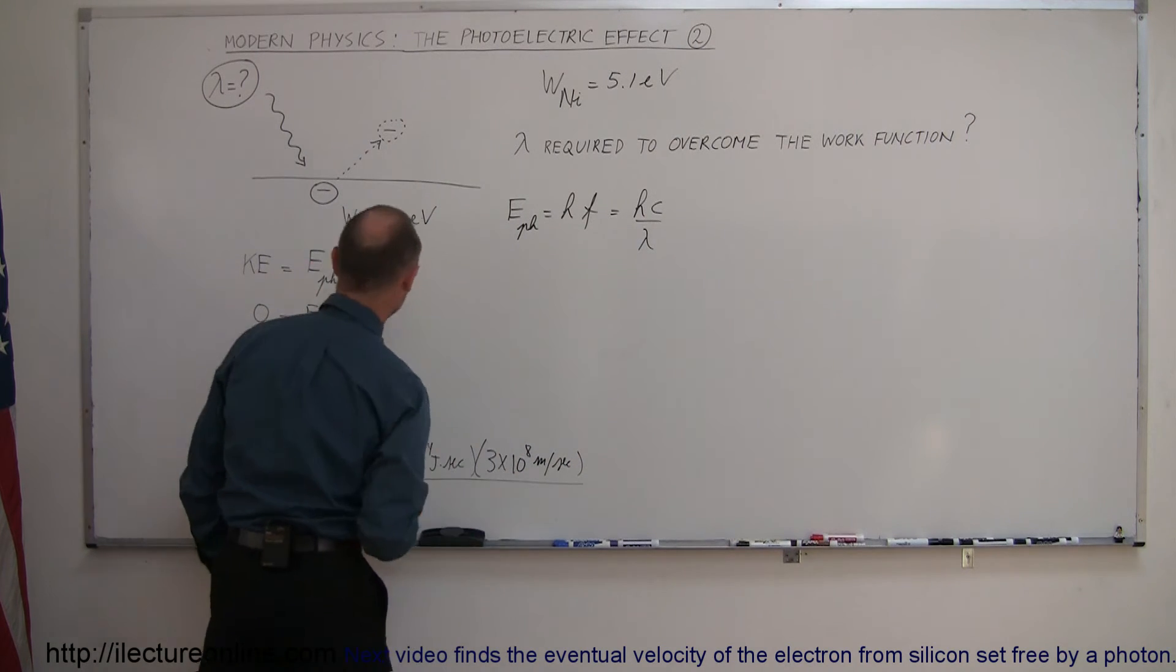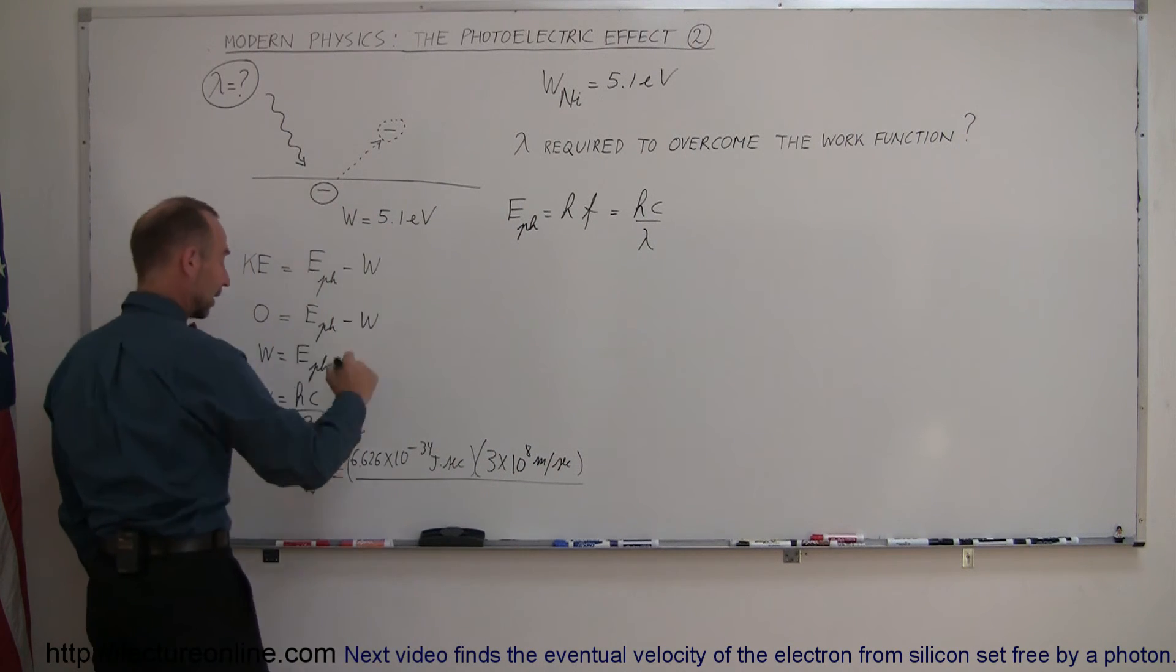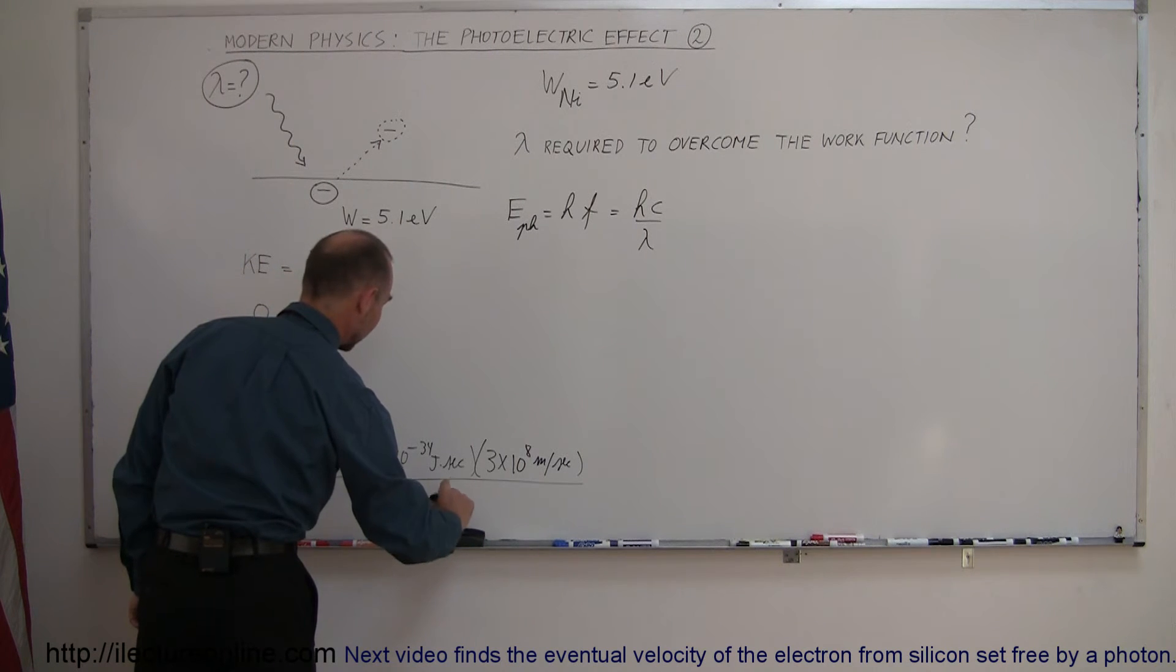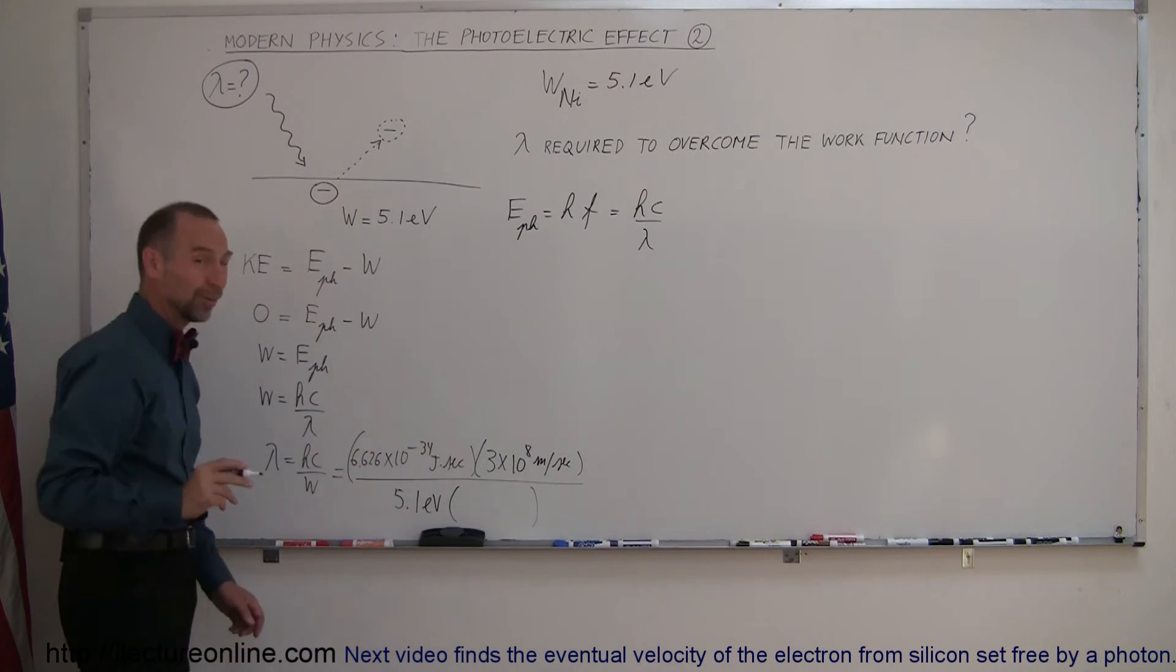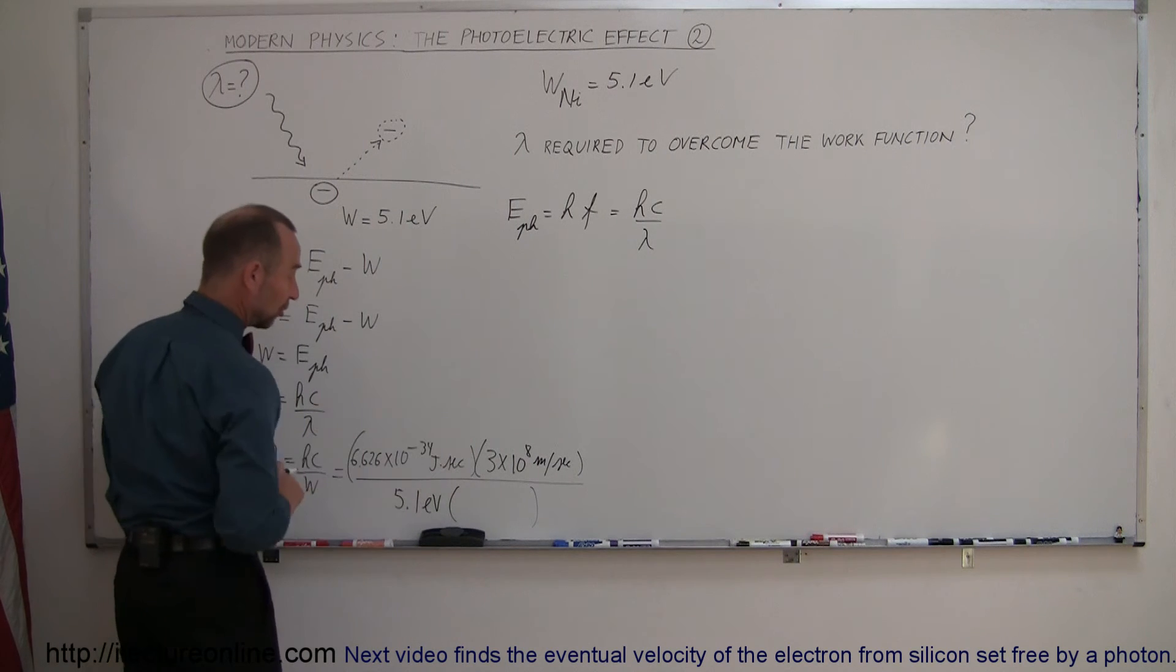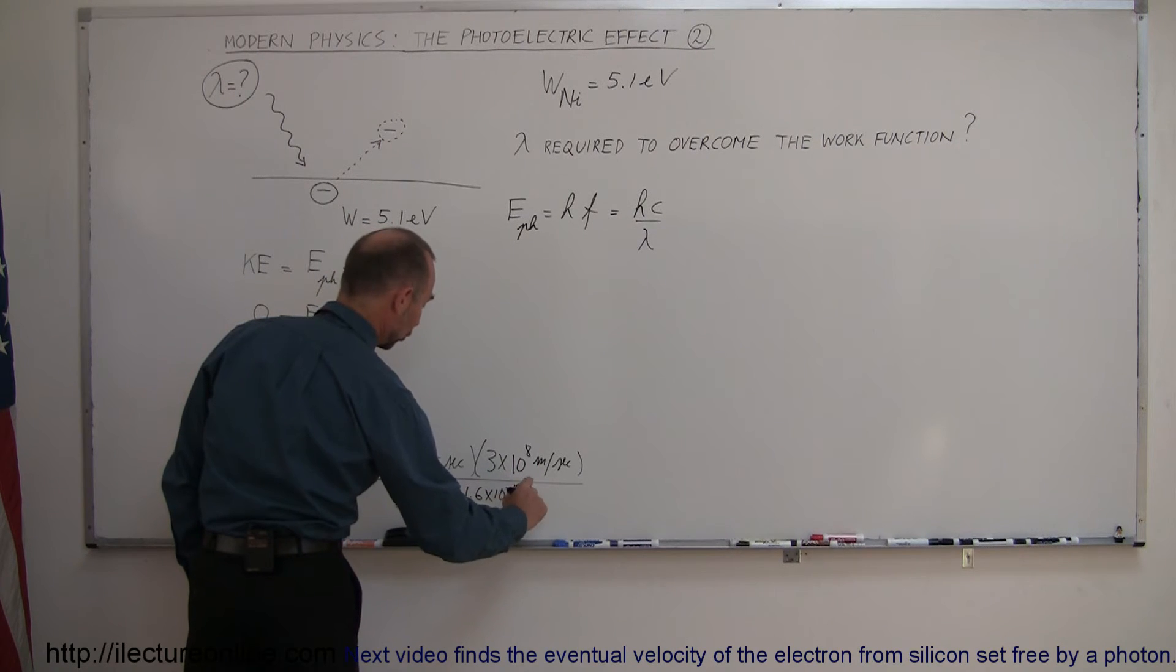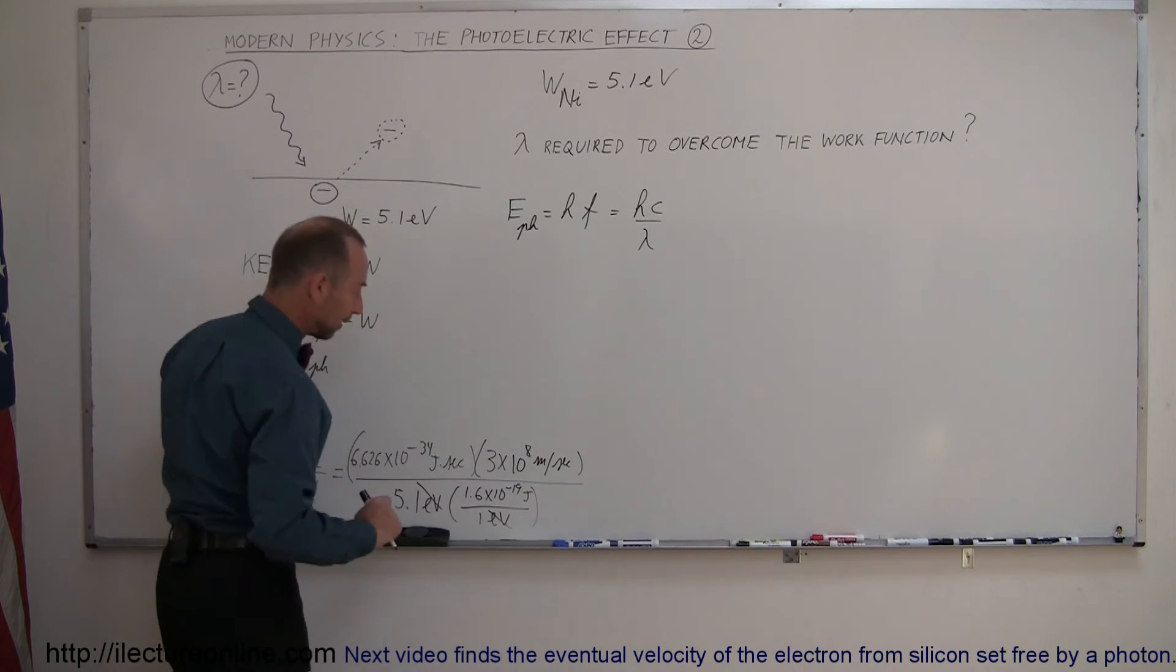and take the whole thing and divide it by the work function. Now the work function was given to us in electron volts, 5.1 electron volts, and of course if you want to convert that to joules, which we have to, otherwise we don't match up with these units up here, that would be equal to 1.6 times 10 to the minus 19 joules per 1 electron volt, so the electron volts cancel out.